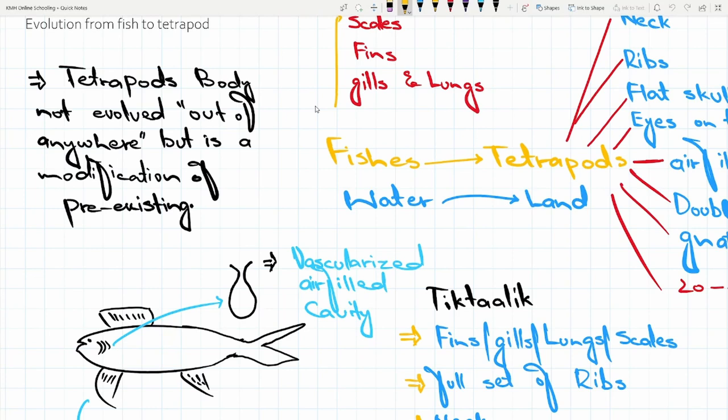But it's a simple modification of the pre-existing form. You have a streamline form of the fishes, they modified themselves with such changes that they are able, capable to survive on the earth, to survive on the land, to survive on the terrestrial environment. So this one is the modification of the pre-existing form.